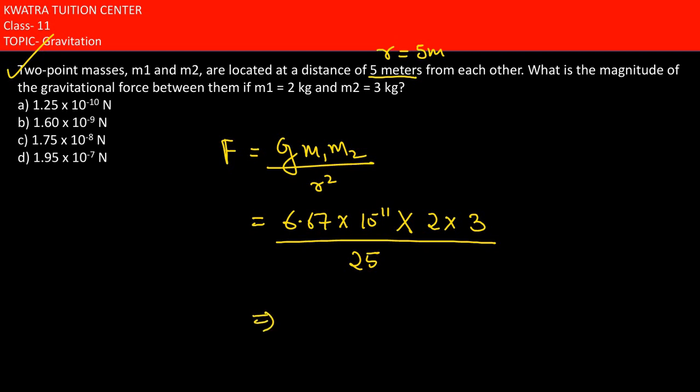So we need to multiply all these values. 6.67 multiplied with 6 first.